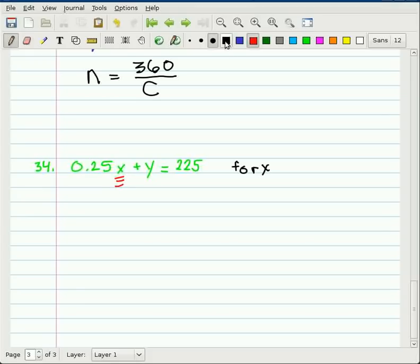And in order to isolate x, we're going to need to do the inverse operation on plus y and then the inverse operation on times 0.25. The inverse operation on plus y is a minus y. And on this side, the left, the y's are canceling. On the right, we get 225 minus y. We don't know how to do that math because they're not like terms. So we write down 225 minus y.